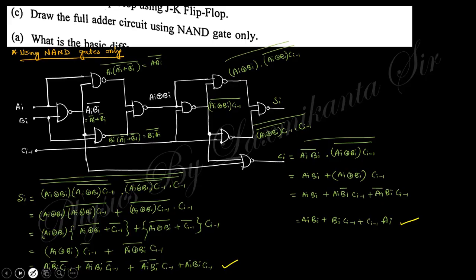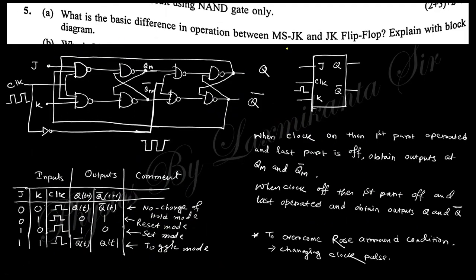The next question asks about the basic difference in operation between a master-slave JK and a regular JK flip-flop. In the case of a regular JK flip-flop, there is a race-around condition. What is the race-around condition? Because the output is fed back to the input, there is a time delay between the clock pulse. If this time delay is not matched by the clock pulse, the output changes incorrectly. To remove this race-around condition, the master-slave flip-flop uses two JK flip-flops.